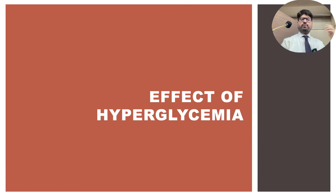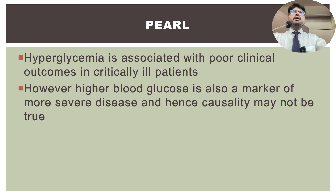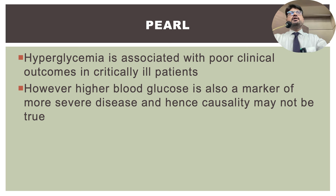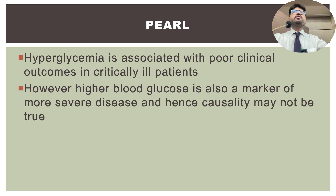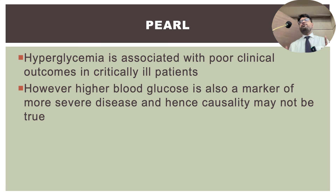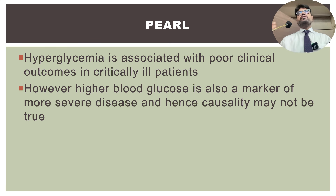We also use certain counter-regulatory hormones in critical illness that contribute to the same process. Two are absolutely essential to understand: vasopressors — noradrenaline, adrenaline — are counter-regulatory to insulin and will increase blood sugar. Glucocorticoids and steroids will also increase blood sugar. You must be completely aware of this.